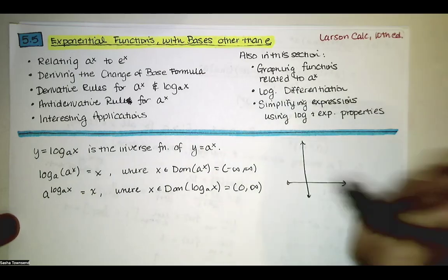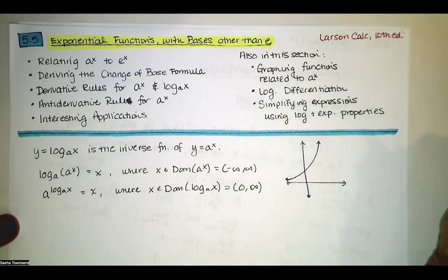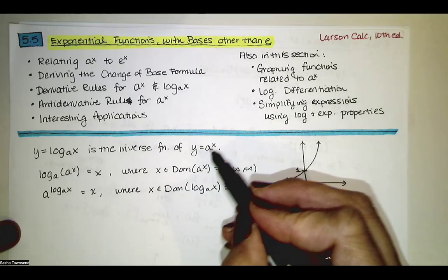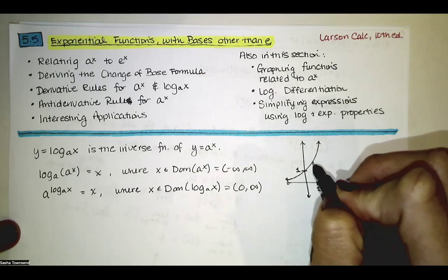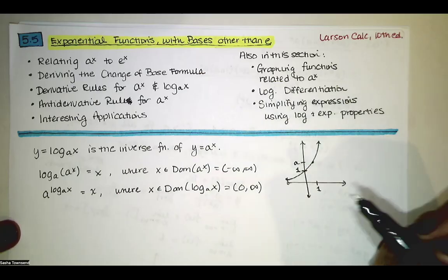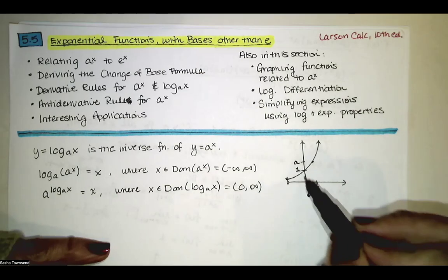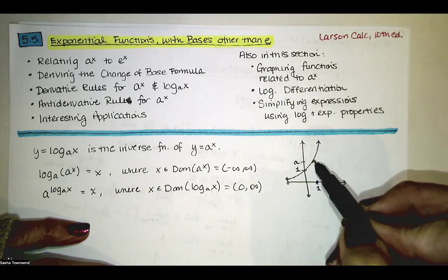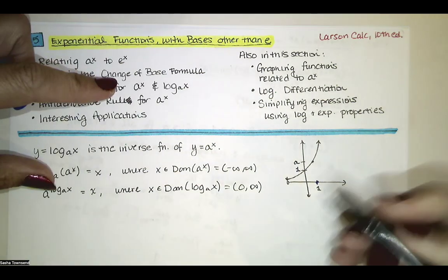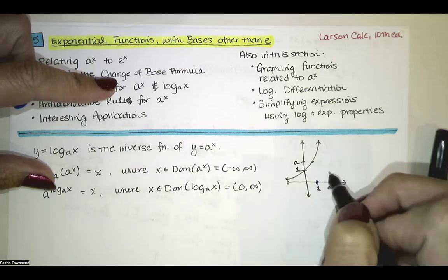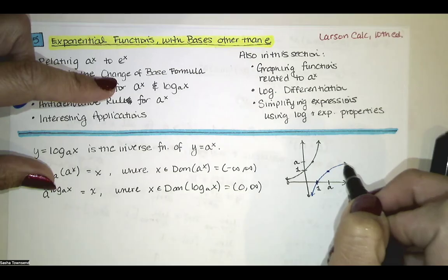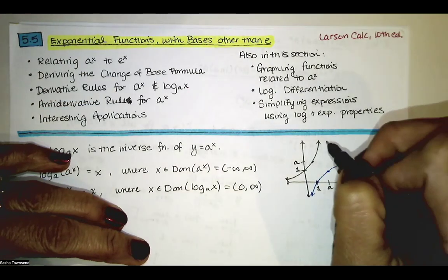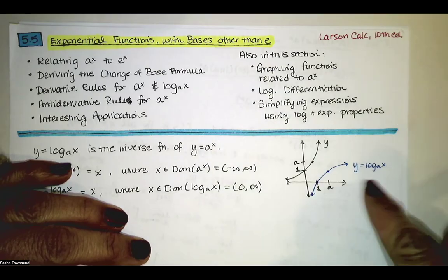Graphically, a to the x looks roughly like an increasing curve when a is greater than one. When we substitute x equals zero, we get a to the zero, which is one. When x equals one, y equals a. When we graph the inverse function, we switch the x and y pairs: since x equals zero, y equals one is on this graph, x equals one, y equals zero is on the inverse function graph. And since x equals one, y equals a is on this graph, x equals a, y equals one is on the inverse graph.